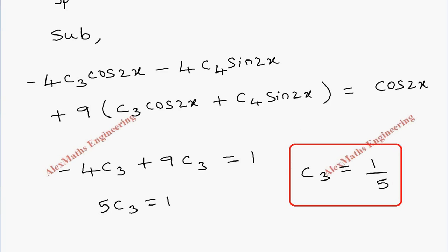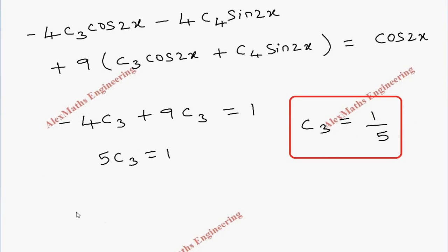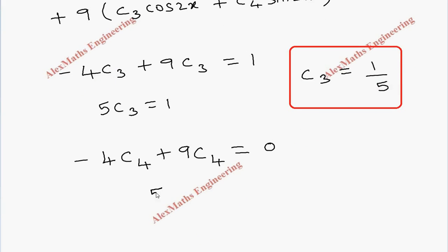In the same way, let's compare the sin 2x coefficients on both sides. The first term is minus 4c4 plus 9c4 equals the other side. There is no sin 2x, so it is 0. From this we get 5c4 equals 0, which means c4 equals 0.